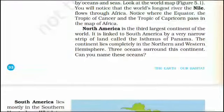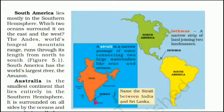North America is the third largest continent of the world. It is linked to South America by a very narrow strip of land called the Isthmus of Panama. The continent lies completely in the northern and western hemisphere and is surrounded by three oceans. South America lies mostly in the southern hemisphere. The Andes, the world's longest mountain range, runs through its length from north to south.